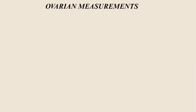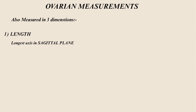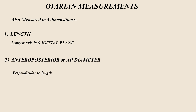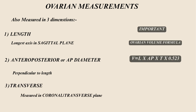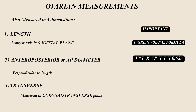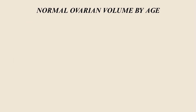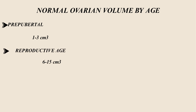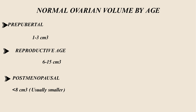Ovaries are also measured in three dimensions: length (longest axis in the sagittal plane), anteroposterior diameter (perpendicular to the length), and transverse (measured in the coronal plane). Ovarian volume formula is: V = L × AP × Transverse × 0.523. Normal ovarian size by age: prepubertal is 1 to 3 cubic centimeters, reproductive age is 6 to 15 cubic centimeters, and postmenopausal is less than 8 cubic centimeters.